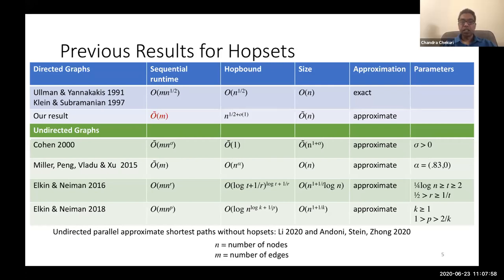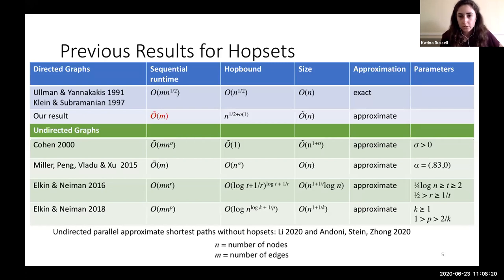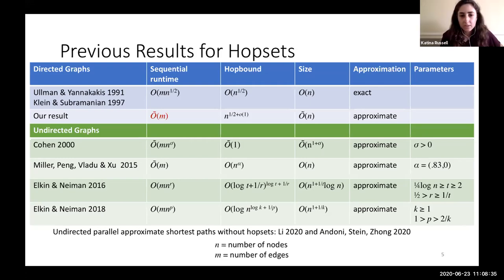Tatcha Paul asked: are there any parallel algorithms for directed shortest paths not based on hopsets? For parallel approximate shortest paths, the Ullman-Yanakakis and Subramanian-Klein ones are hopset-based, but there's Spencer's algorithm which does directed parallel shortest paths without hopsets. They use a sort of path doubling technique. For root-n span, their work is something like m + n², so it's much higher.